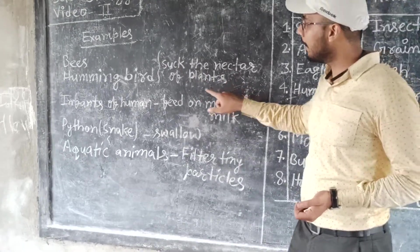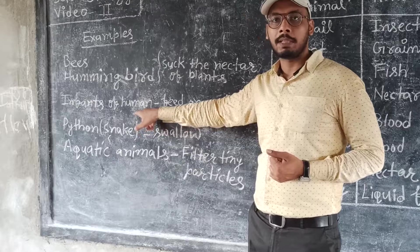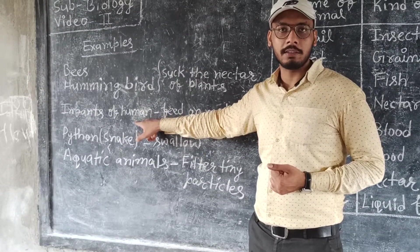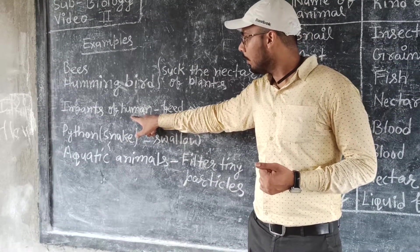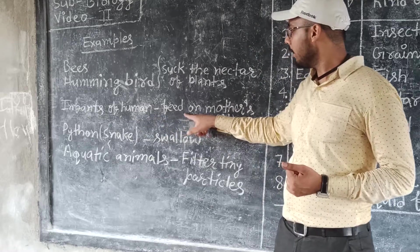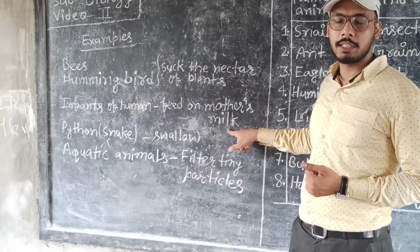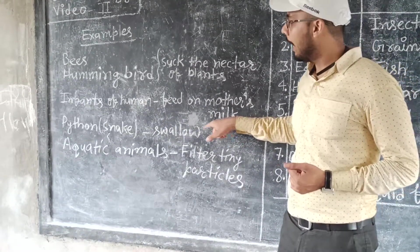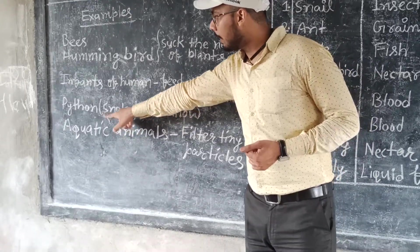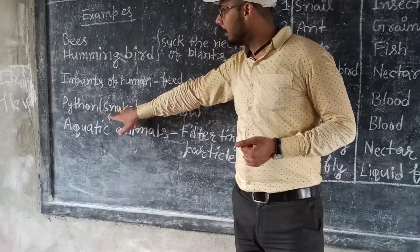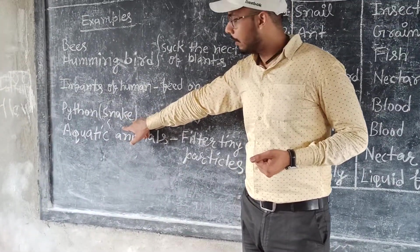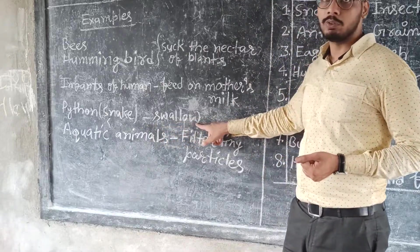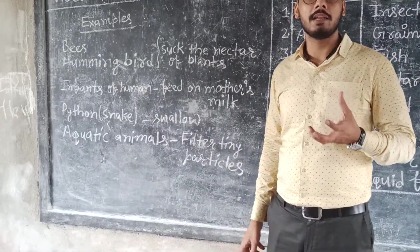Second is the infants of humans — they feed on mother's milk. When we talk about a python, which is a type of snake, we see they swallow their prey whole.